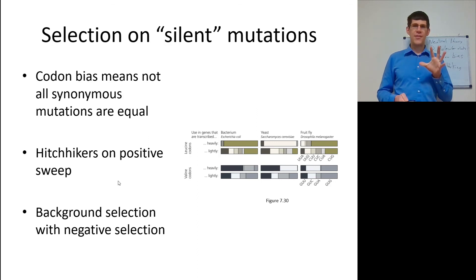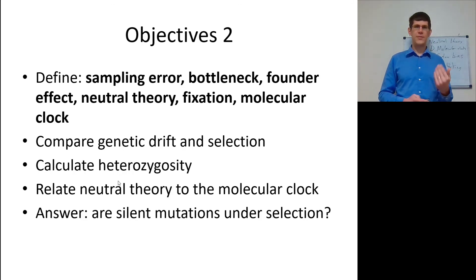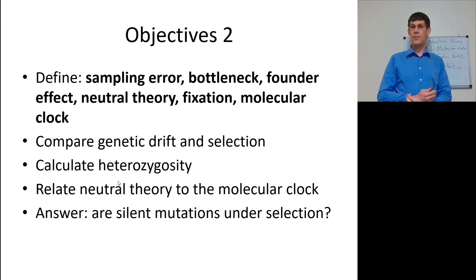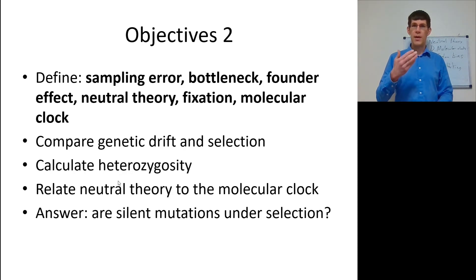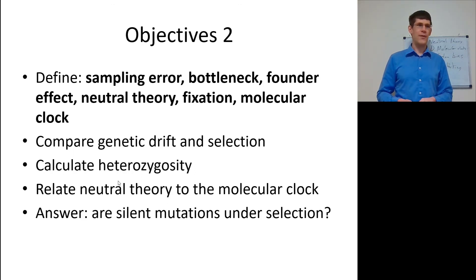This is how small population size and genetic drift result in violations of Hardy-Weinberg equilibrium. Review the objectives we've covered and make sure you can understand them. Are silent mutations under selection? Think codon bias. If you have questions, I'm available in the forum, by email, and occasionally by review session.